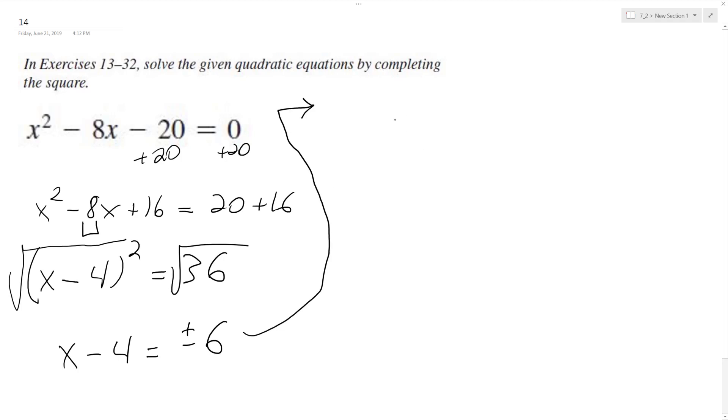And add 4 to both sides. We end up with x is equal to plus or minus 6 plus 4. So this ends up being x is equal to negative 2, negative 6 plus 4, and positive 6 plus 4 is 10.